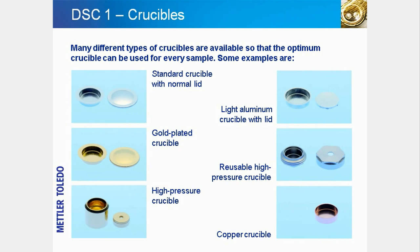Depending on the sample and measurement requirements, other crucibles may also be needed. For example, gold crucibles are available for samples that react with aluminum. A common application is to measure a sample in a closed atmosphere and at a higher pressure than ambient — these measurements can be performed using a high-pressure crucible. In fact, there are more than 25 different types of crucible to match the requirements set by the sample and application.